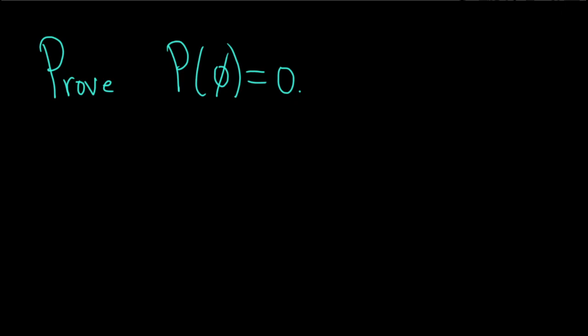In this problem, we're going to prove that the probability of the impossible event is equal to 0. So here, this is the empty set.